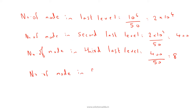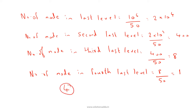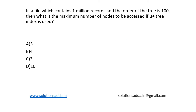The number of nodes in the fourth last level is equal to 8 / 50, which we can round up to 1. So the maximum number of nodes to be accessed equals the number of levels in the B+ tree. Here there are four levels, so the correct option is option 4, and option B is the correct answer.